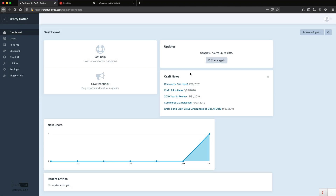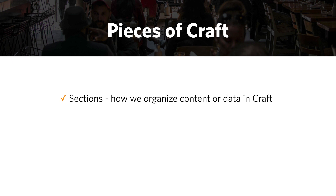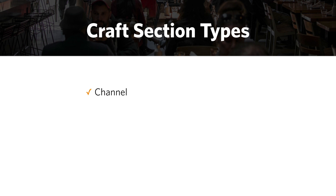Before we get started using Craft to build our first website, I want to talk about the pieces of Craft. These are the largest components that we'll use to implement our website's content and data. The first part of the pieces of Craft is sections, and this is how we organize our content or data in Craft. Inside of sections, we have different types: a channel, a structure, and a single.